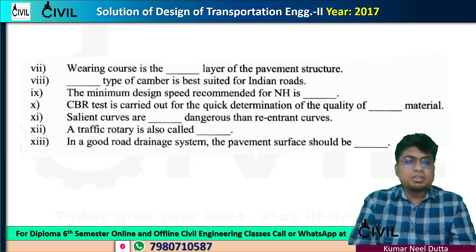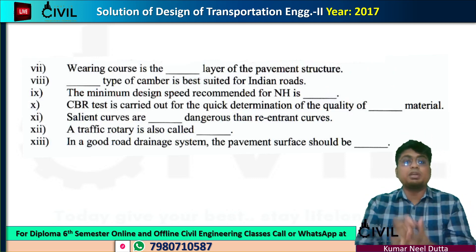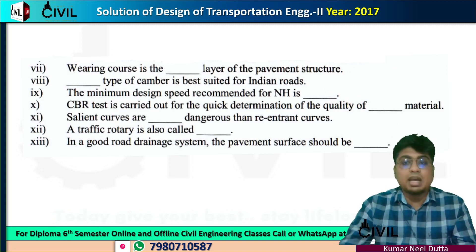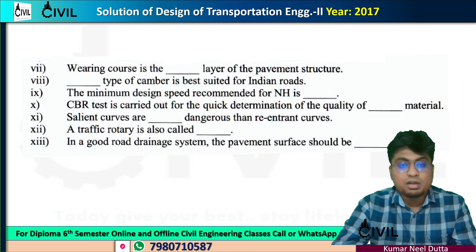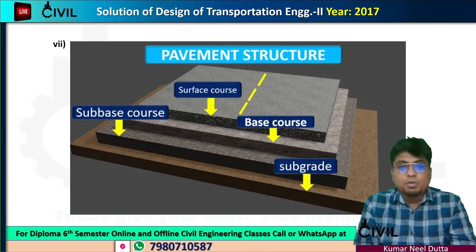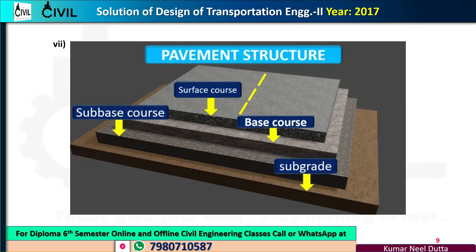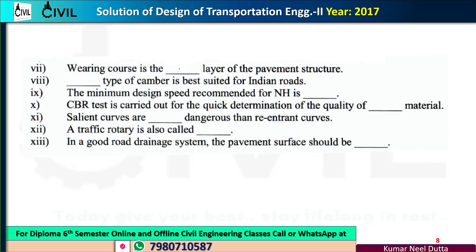Which layer of the pavement structure is the wearing course? If we look at the pavement cross-section, the layers are: subgrade, subbase, base course, and surface course — also called the wearing course. So the wearing course is the topmost layer of the pavement structure.